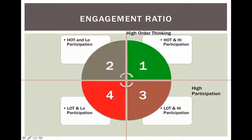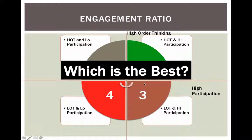When you break this up with these two lines, we're creating four quadrants. What we want to do is create our instruction so that it falls in one of these squares — though the squares are not equal; some are better than others. We have: high order thinking and high participation, high order thinking and low participation, low order thinking and low participation, and low order thinking and high participation. I'm going to leave this first part of the screencast asking you the question: which of these quadrants do you think is best? It's pretty easy, but think about it until you start the next one. Thanks.